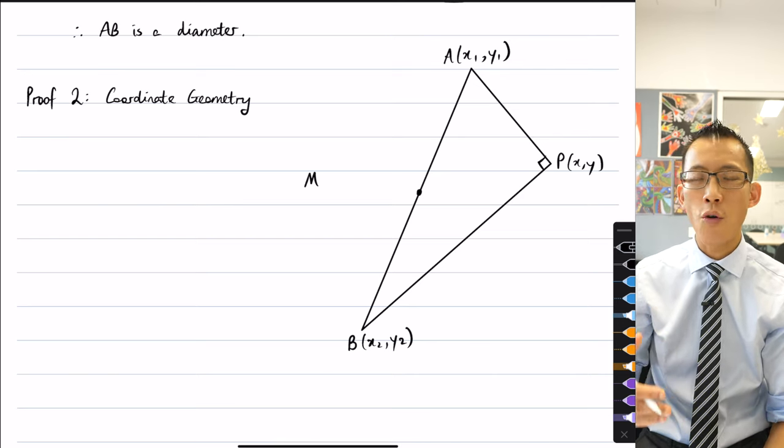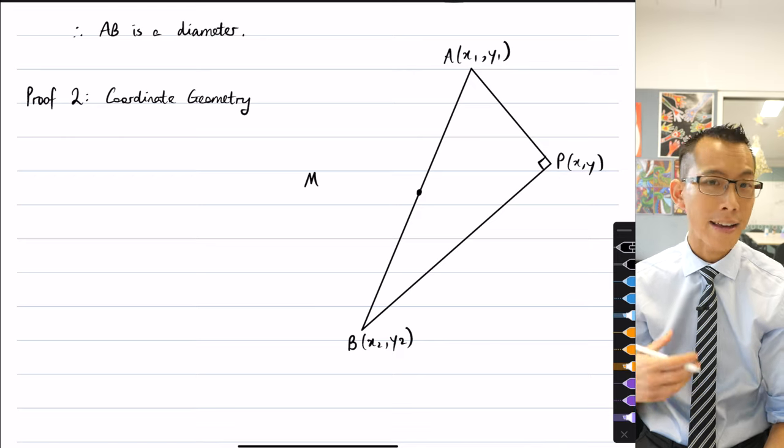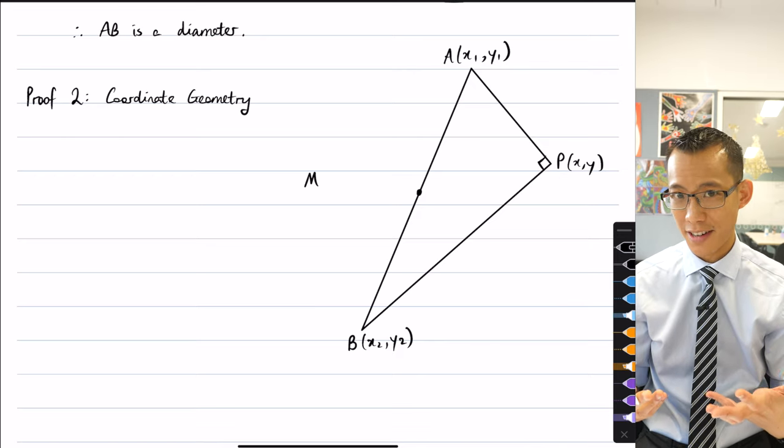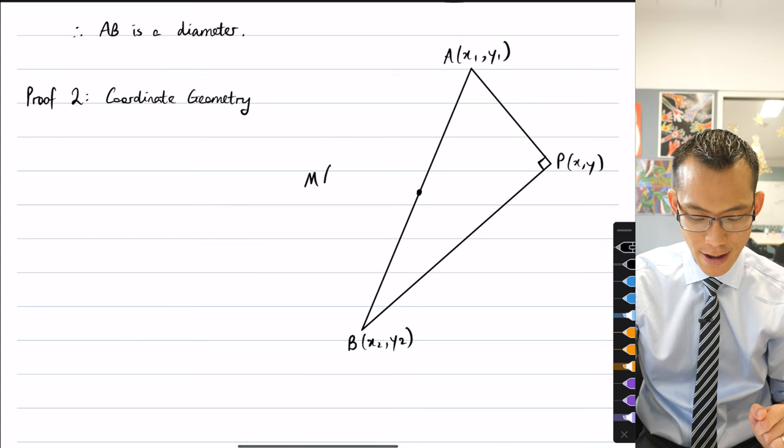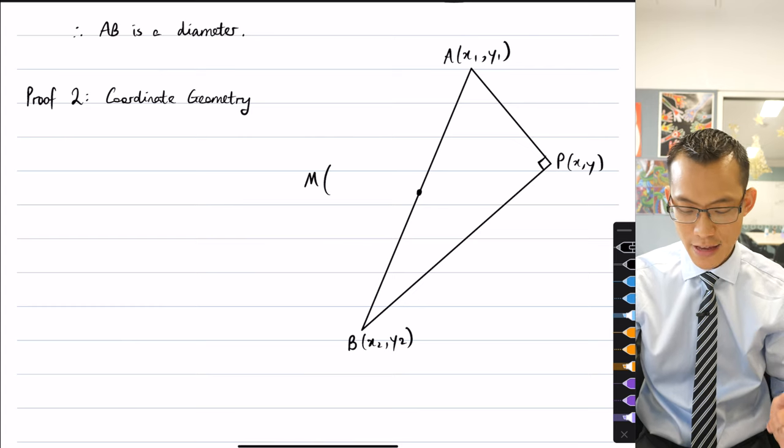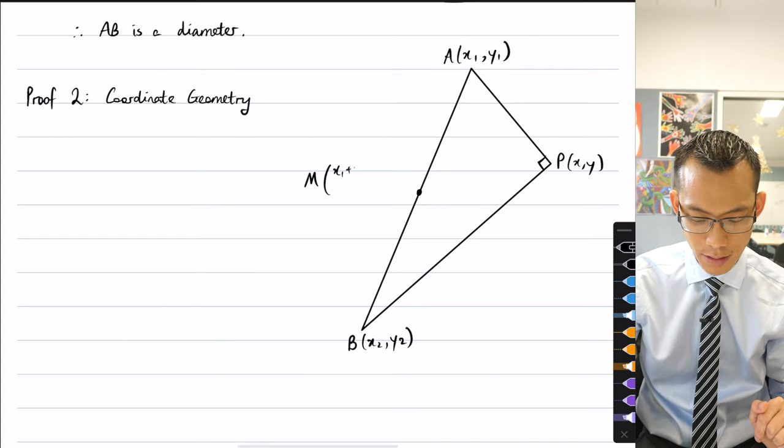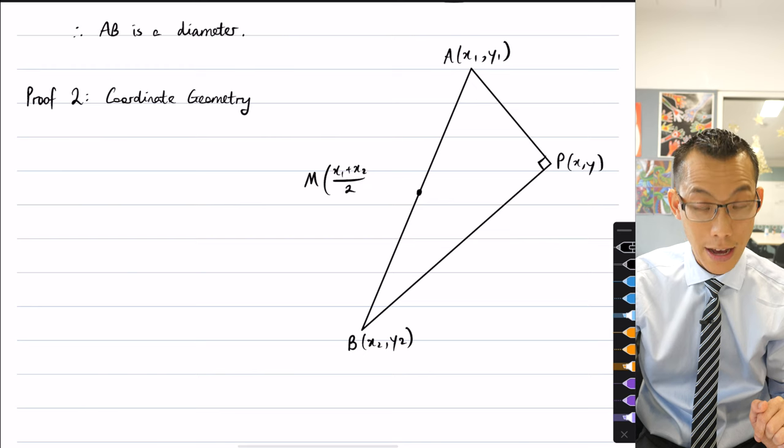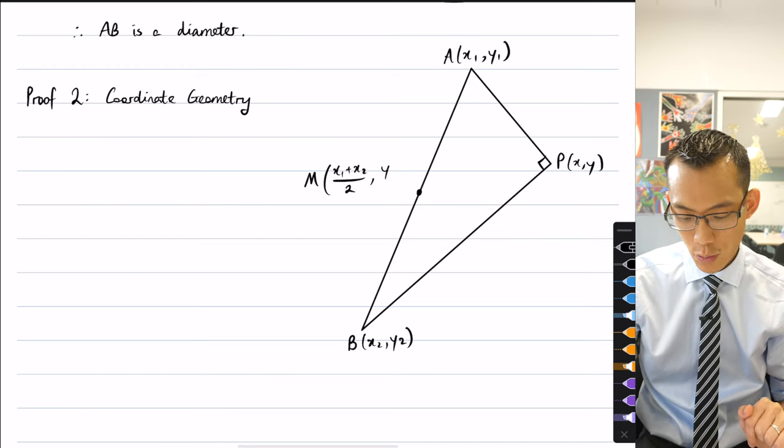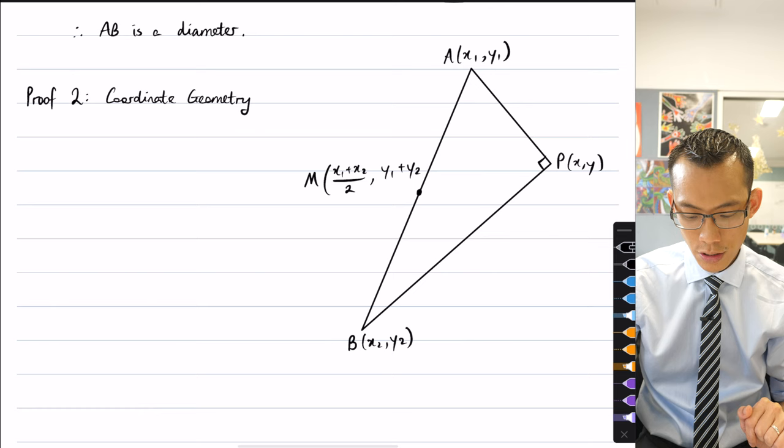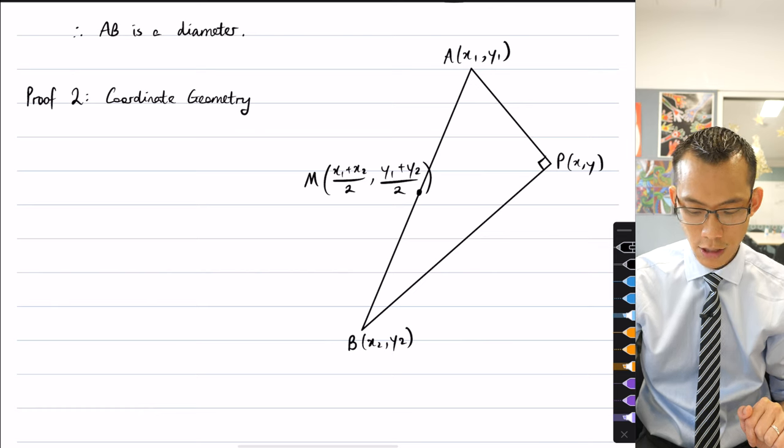I can calculate it using just a fairly standard coordinate geometry formula. This is going to be, I'll take the average of the x coordinates, so that's x1 plus x2 divided by 2, and then I'll take the average of the y coordinates, y1 plus y2 over 2. There you go.